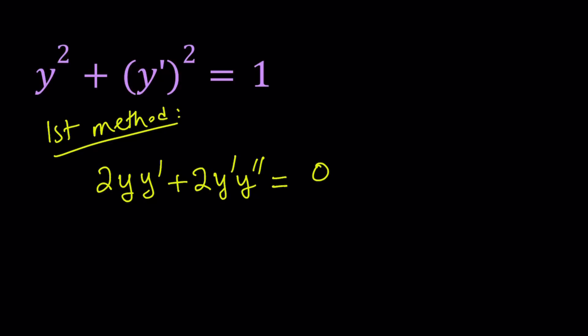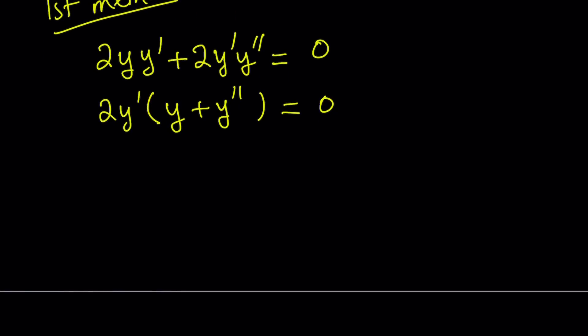This is factorable. Let's factor out 2y prime, and then we get y plus y double prime equals 0. This is a product, so we can look at each factor separately. y prime equals 0 is going to be Case 1, and that's very easy to solve — the derivative of a function is 0 means it must be a constant. So y equals c.